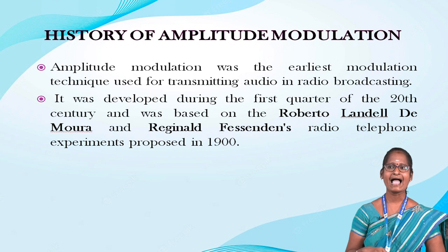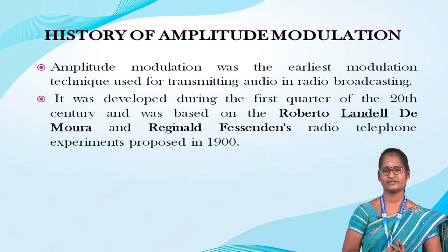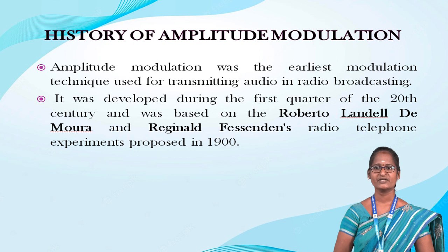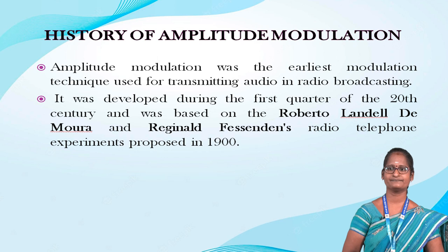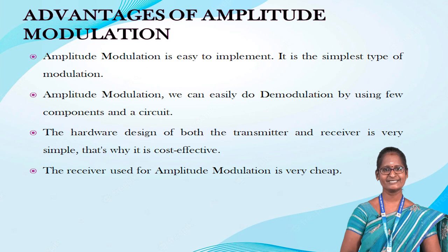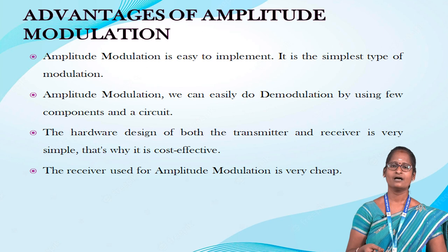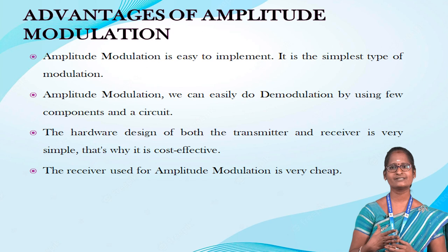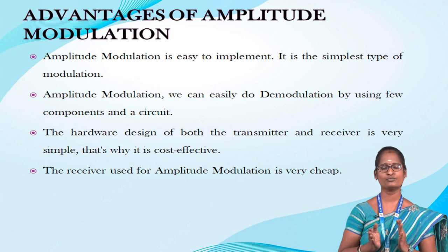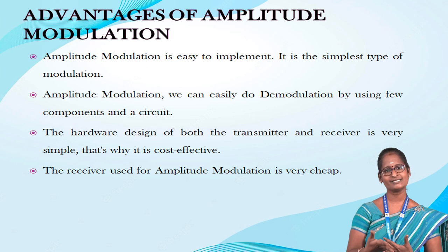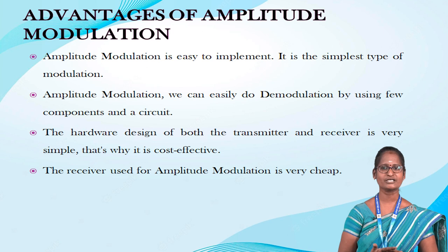History of amplitude modulation: AM was the earliest modulation technique used for transmitting audio in radio broadcasting. It was developed during the first quarter of the 20th century, based on the work of Roberto Landel de Morris and Reginald, with radio telephone experiments proposed in 1900. Advantages of amplitude modulation: it is easy to implement and the simplest type of modulation. Demodulation can be done using few components and a circuit. The hardware design of both transmitter and receiver is very simple, making it cost effective. The receiver used for AM is very cheap.